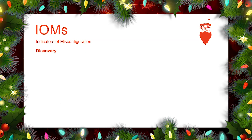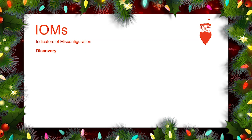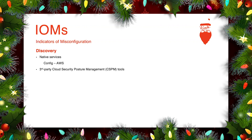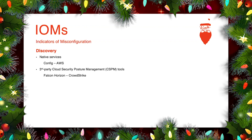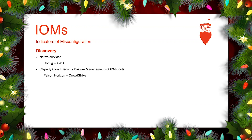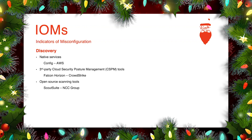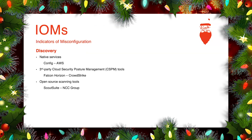Discovery of IOMs in an environment — there are a few different ways to do it. You could do it natively in AWS through something like AWS Config. There are third-party tools like CSPM, such as Falcon Horizon by CrowdStrike. There are also open source scanning tools such as Scout Suite by NCC Group.